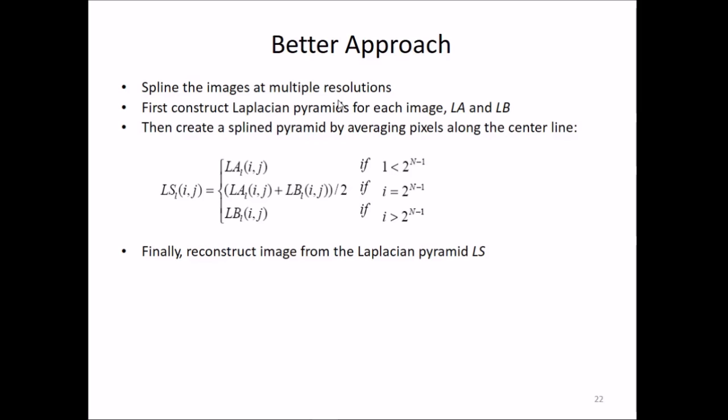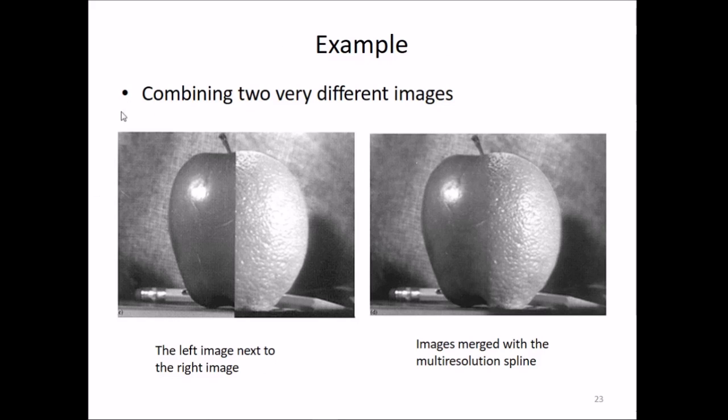There's a better approach: spline the images at multiple resolutions. Construct Laplacian pyramids for each image, L_a and L_b. Then create a spline pyramid by averaging pixels along the center line. This is the expression: if l ≤ 2^(n-1), we take the left one; otherwise the right one; in between we add and divide by 2. Finally reconstruct the image from the Laplacian pyramid L_s.